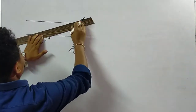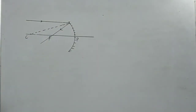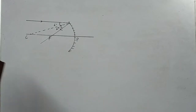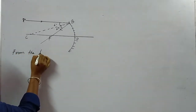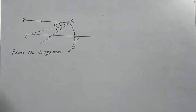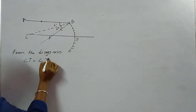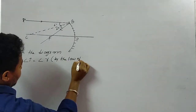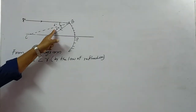If I draw a line at the center of curvature, this will be the normal in this case. This angle will be the angle of incidence and this will be the angle of reflection. Let us consider this point is A and this point is B. From the diagram we can find that angle i is equal to angle r — that is by the law of reflection.